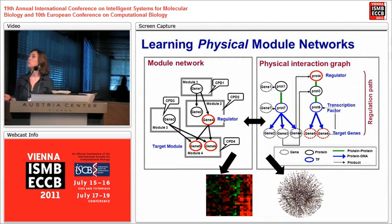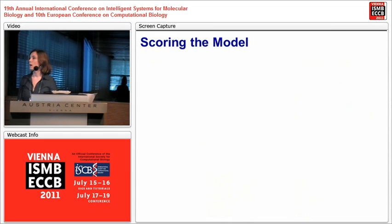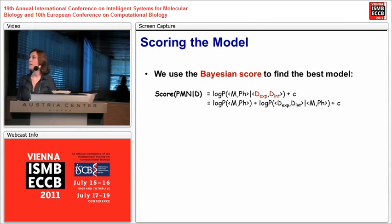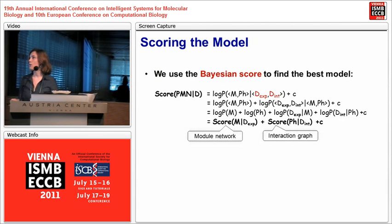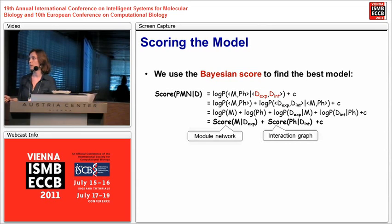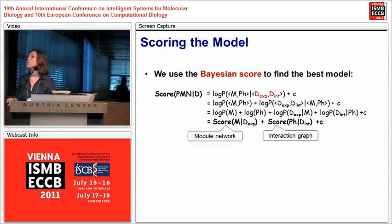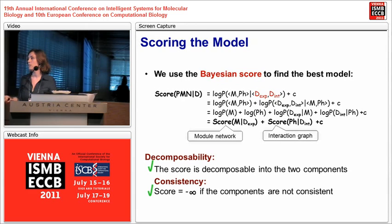For the complete physical module network, we score the model using a Bayesian score, which can be viewed as the sum of the prior and the likelihood of the model. Choosing certain priors gives the score two important attributes: first, it is decomposable into the two components — the module network and the interaction graph — allowing efficient learning; and second, it penalizes inconsistent configurations, keeping the model consistent during learning.